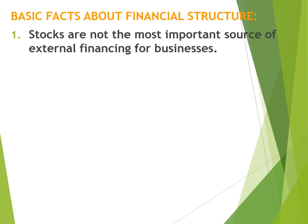Some basic facts about financial structure: The first fact is that stocks are not the most important source of external financing for businesses. Media gives the stock market a lot of importance, suggesting that if the market crashes, businesses will collapse. But in reality, stocks are not the primary source of external financing for any business. Mishkin's book even notes that during four years, businesses sold fewer stocks than they purchased — confirming stocks are not the primary source of external financing.